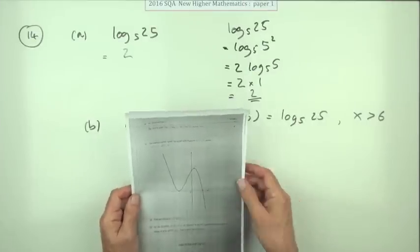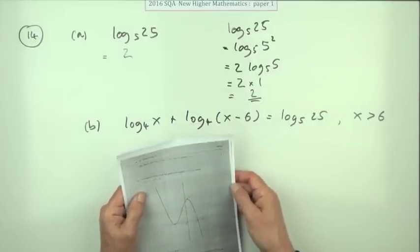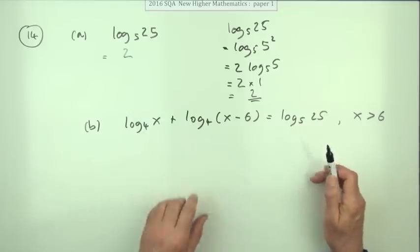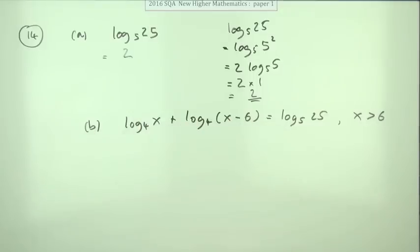And so part B, for five marks, solve this equation here. That looks like a bit of a gift. There's only a couple of things you need to do: join those logs together and then remove the log.